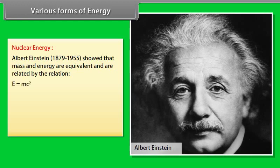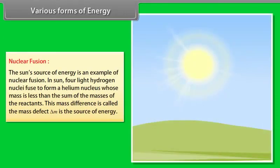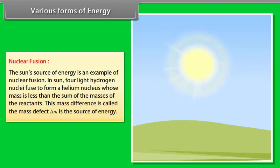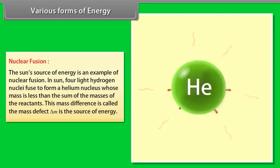Nuclear energy. Albert Einstein, 1879-1955, showed that mass and energy are equivalent and are related by the relation E equals mc square, where C is the speed of light in vacuum. There are two types of nuclear reactions: they are nuclear fusion and nuclear fission reactions. Nuclear fusion: the sun's source of energy is an example of nuclear fusion.